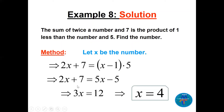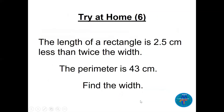Solving 2x + 7 = 5(x - 1): expand to get 2x + 7 = 5x - 5. Rearranging: 7 + 5 = 5x - 2x, so 12 = 3x, giving x = 4.